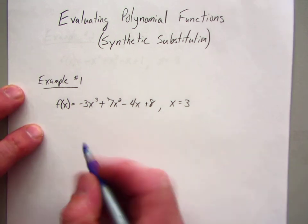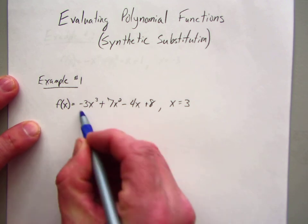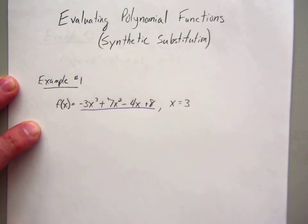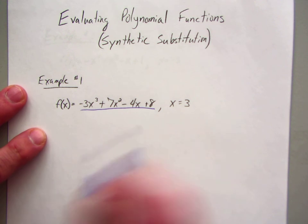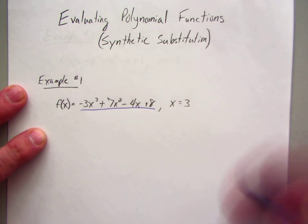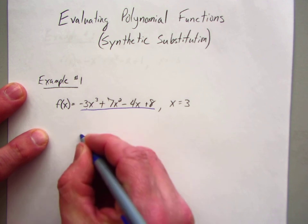The very first thing you do is the setup. You got to make sure the polynomial function is in standard form. In this case it is in standard form. Now we are going to work with the coefficients and the constant. So the coefficient of the leading term, or the first term, is negative 3.